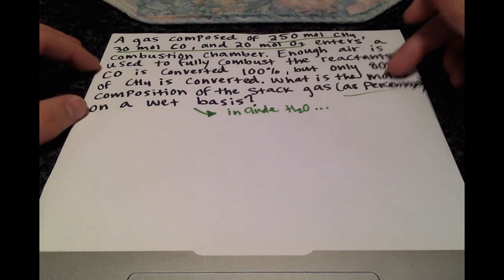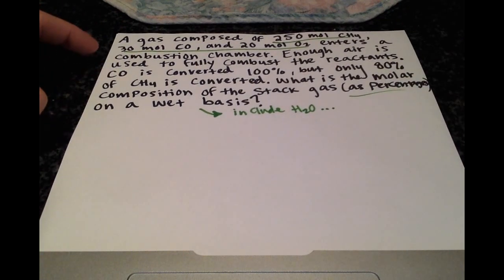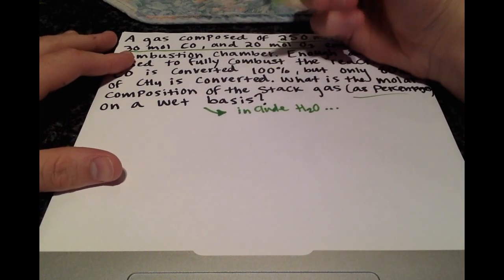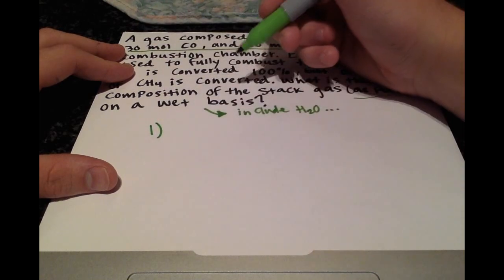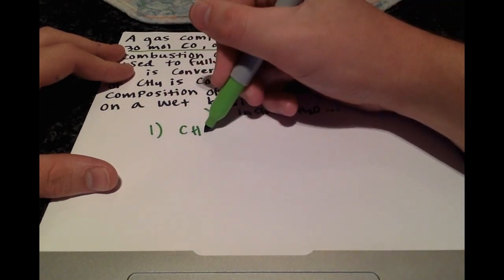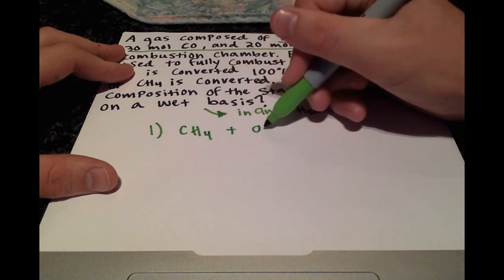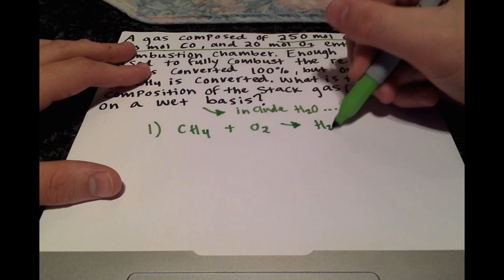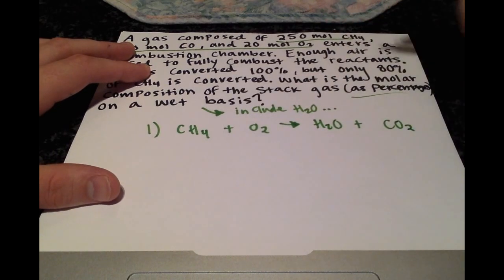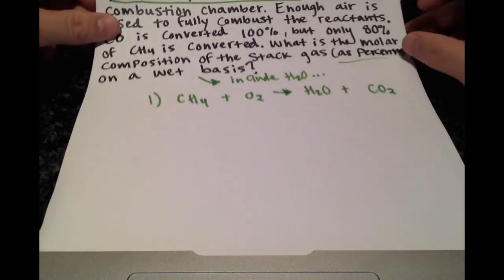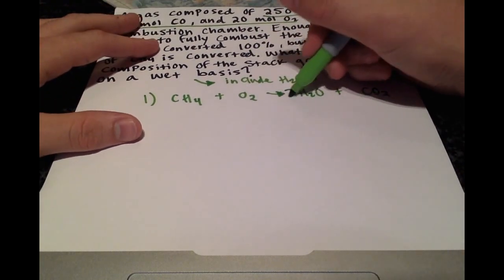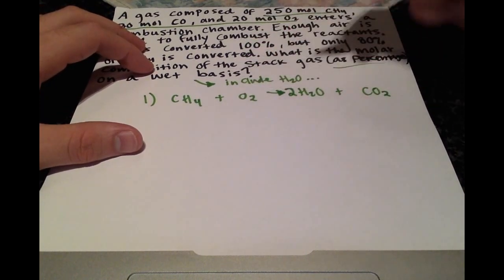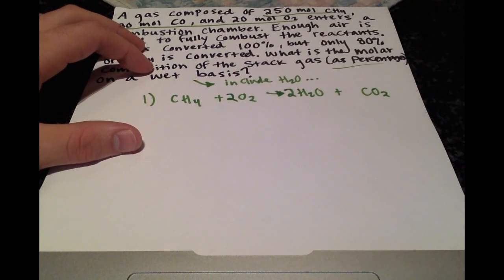Anytime you have combustion problems you have to know the combustion reaction. Our first combustion reaction is CH4 plus O2 which forms H2O and CO2. We have to balance this: there's going to be 2 right here for 4 hydrogens and that's 4 oxygens so a 2 right here.